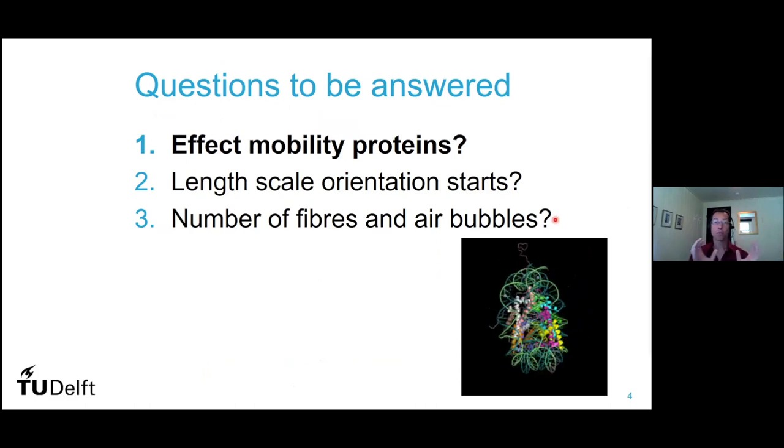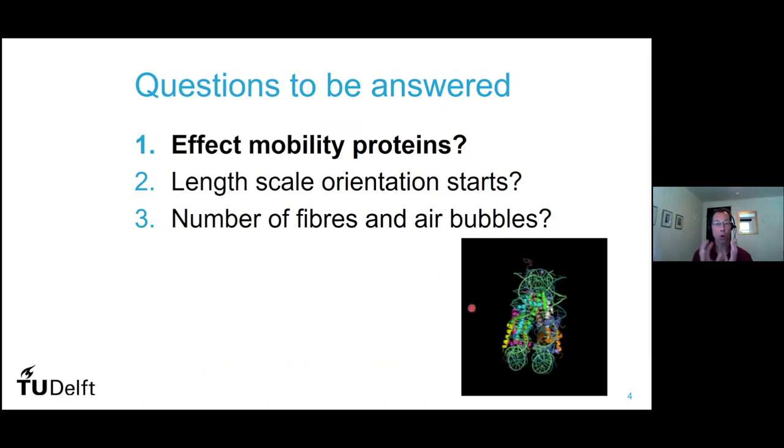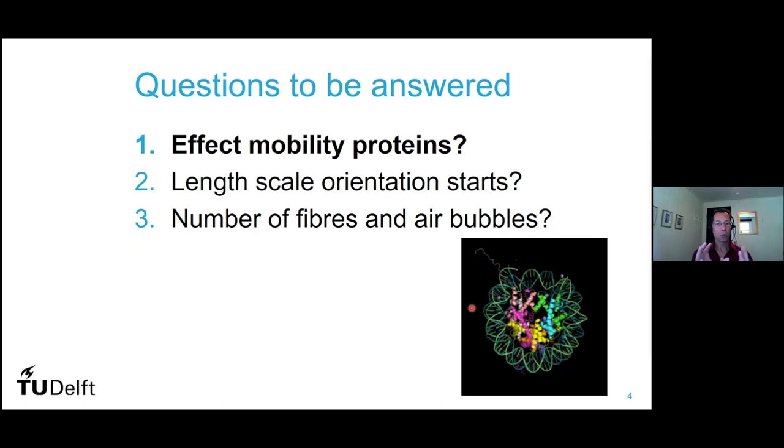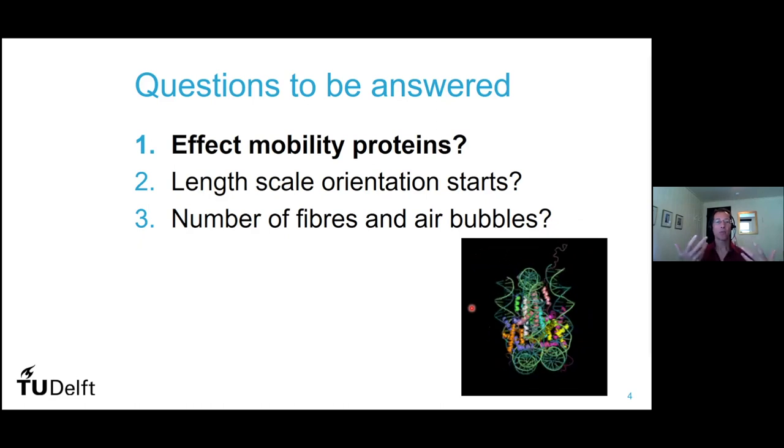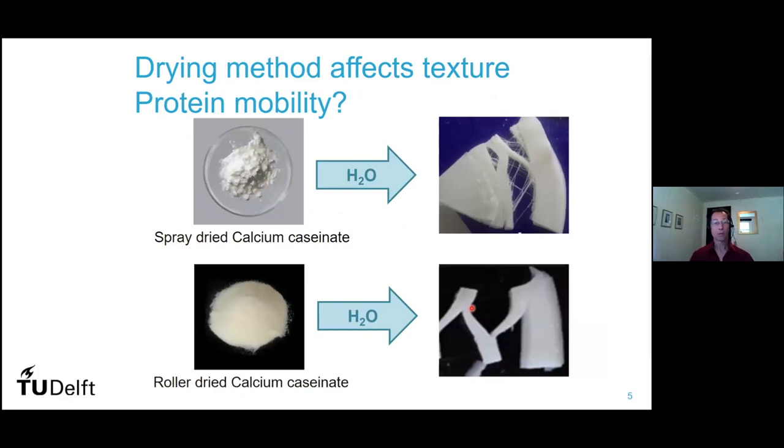One of them was what is the effect of the mobility of the proteins during processing on the kind of fiber structure you can get. It turns out that some of the calcium caseinates really form nice fiber structures that are spray-dried ones.